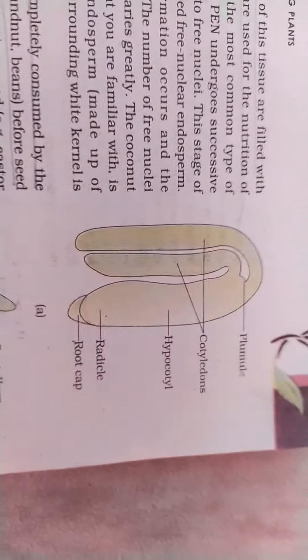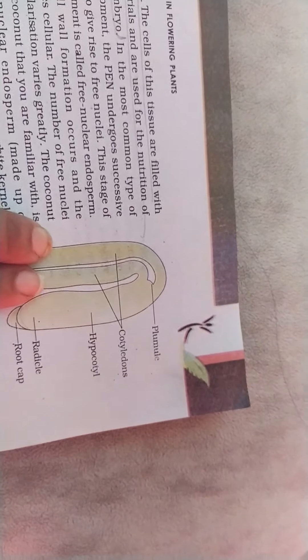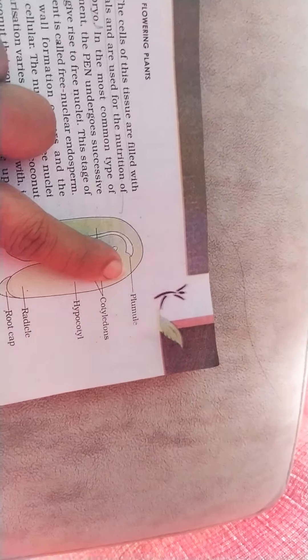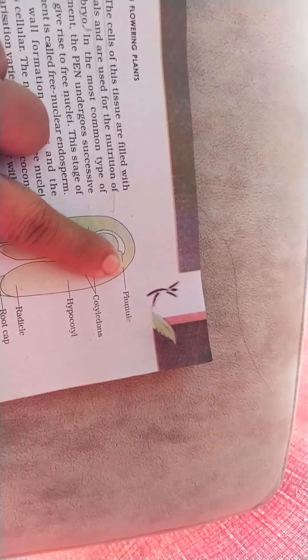If you want to see the diagram it is here. So in the diagram you have two cotyledons, this is the embryonal axis. Here you have plumule that is going to form stem and the cylindrical hypocotyl...